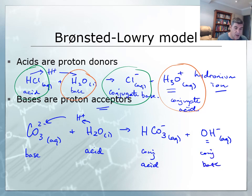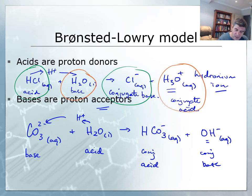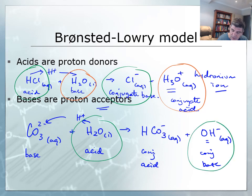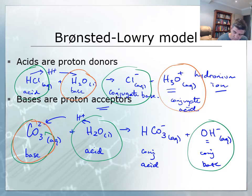We'll look at these in a lot more detail as we explore the Bronsted-Lowry model, because it is a good way of looking at a wider range of acids and bases and being able to classify many different types of reactions. We can identify our acid and conjugate base, and our base with its conjugate acid. We'll look at these pairs in more detail as we go further along. Thanks for watching.